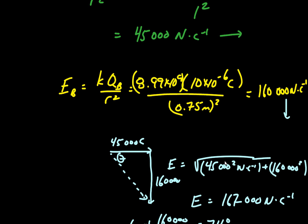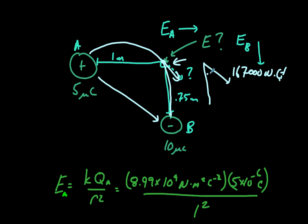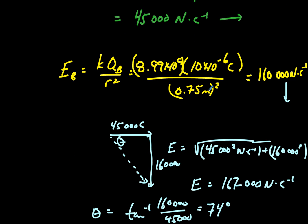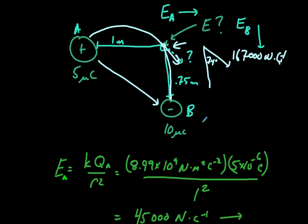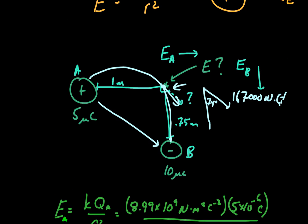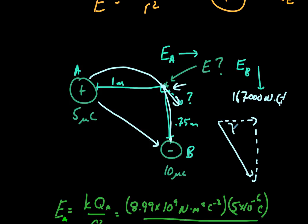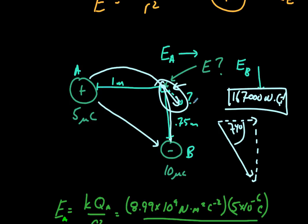What we're saying is that if you drew all the field lines in the space around these charges, they'd be warped such that at this particular point the field has an instantaneous vector of 167,000 Newtons per Coulomb at 74 degrees. Then I can ask: what if I put a one-millionth of a Coulomb charge at that point? How much force would it feel, and in what direction? And that's where we're going to wrap it — that's a long video.